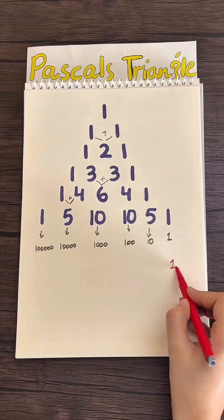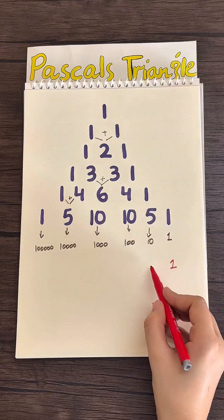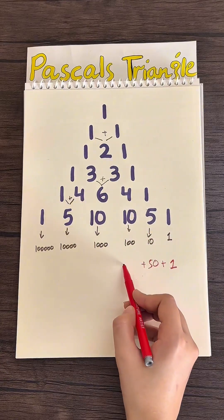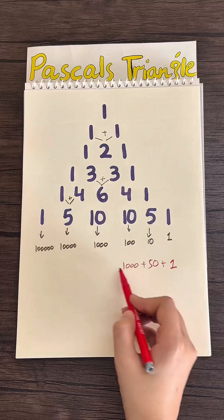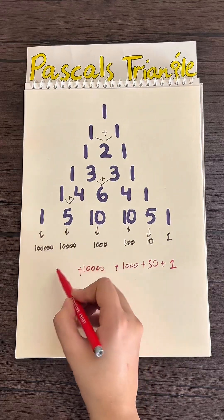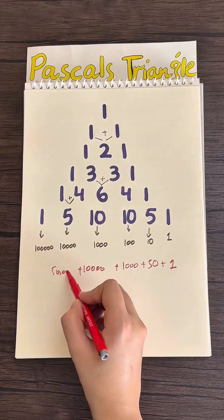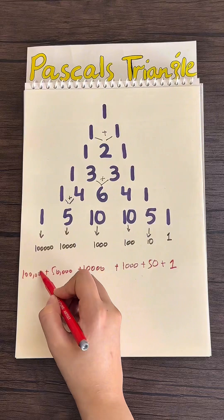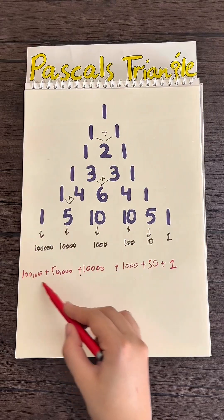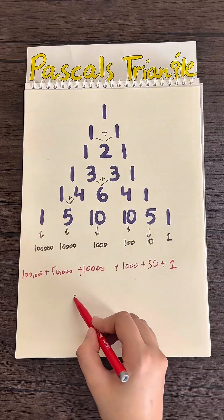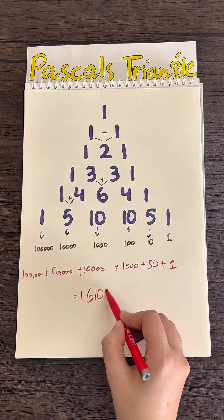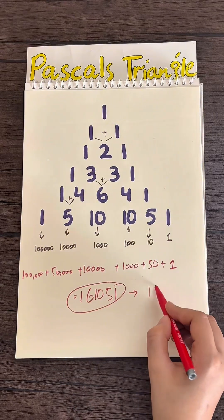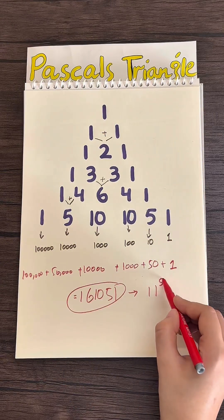So we have 1 in the ones place, 5 in the tens, 50 in the hundreds — that's ten hundreds — ten thousands, fifty thousands, and one hundred thousands. Adding up all these values, in total we have 161,051, and this is 11 to the power of 5.